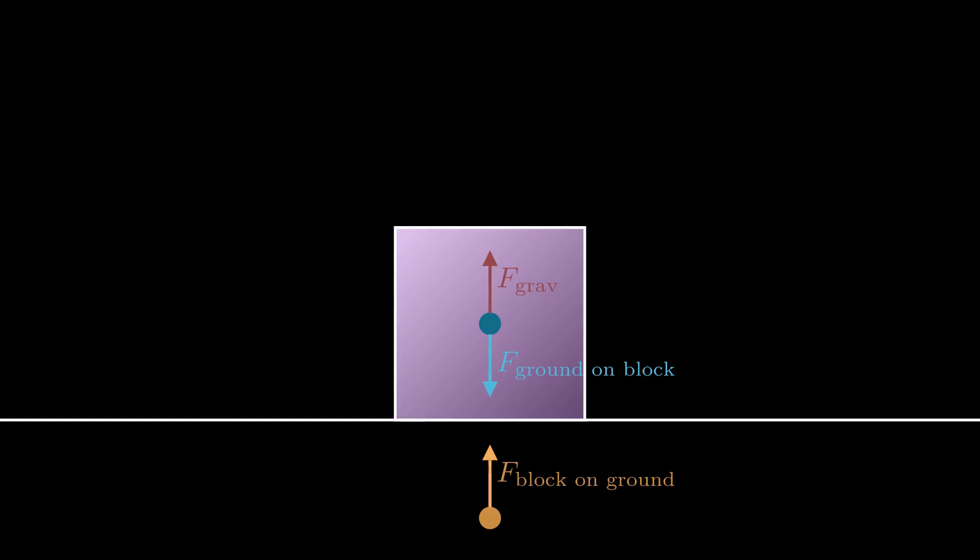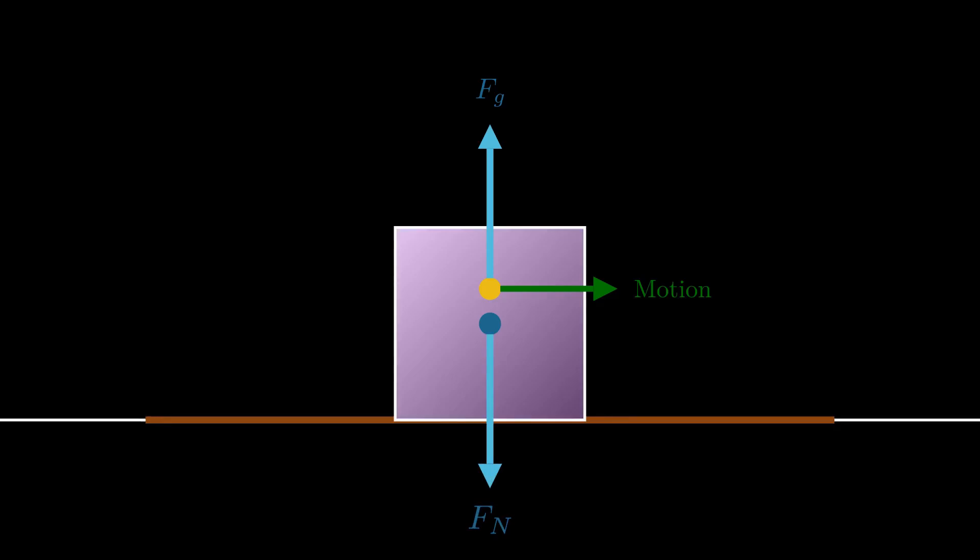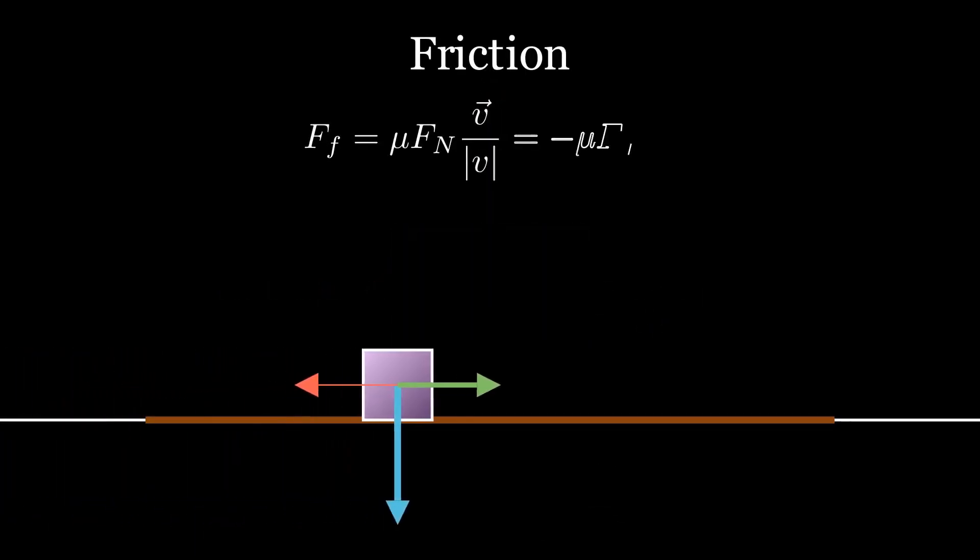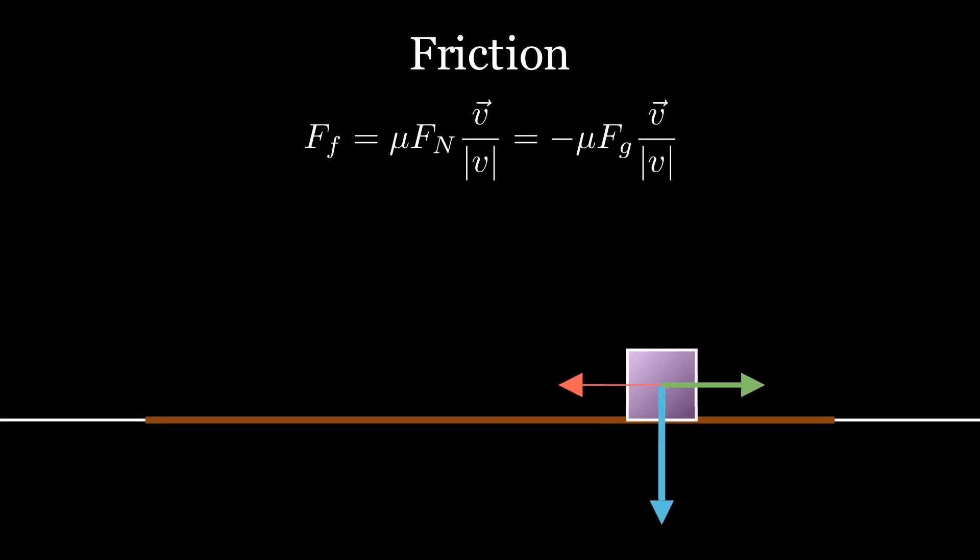The gravitational force points up while the normal force points down. Since the normal force is reversed, it stands to reason that the friction force could also be reversed to point forward along the direction of motion. And since negative mass moves opposite to the forces on it, it would slow down.